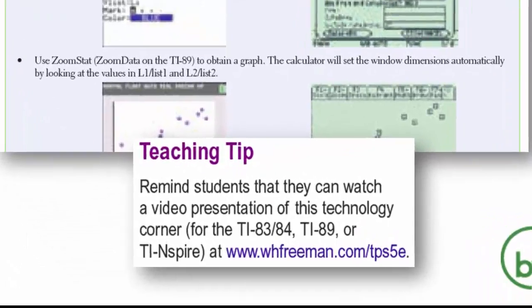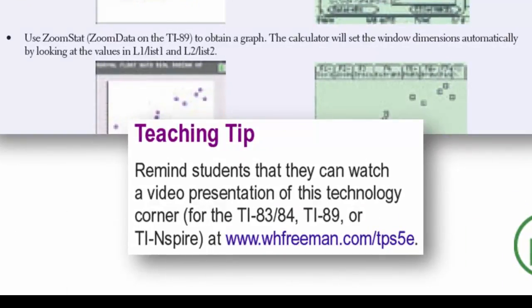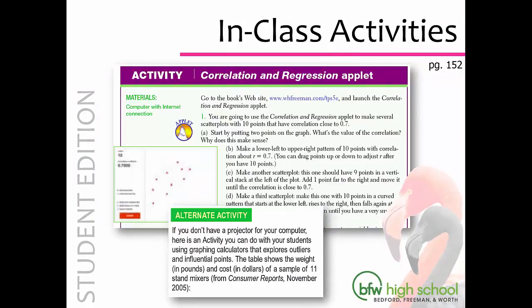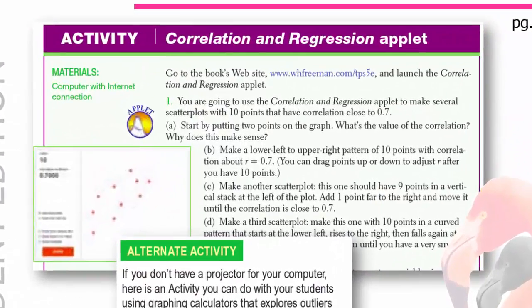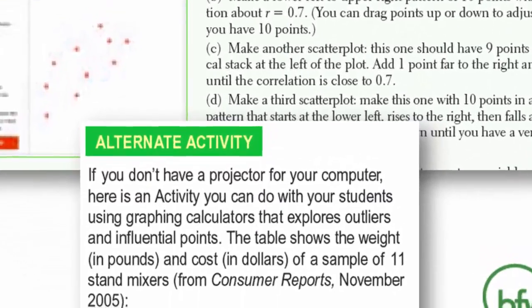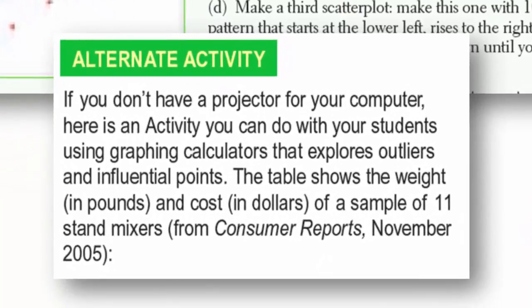In the Annotated Teacher's Edition, we provide you with a reminder for your students. There are numerous in-class activities to do with your students in your classroom. We provide you with applets on the Book Companion site. In the Annotated Teacher's Edition, we will provide you with an alternate activity. For example, if you do not have a computer, there is a separate activity that you can do that studies the same type of mathematics.